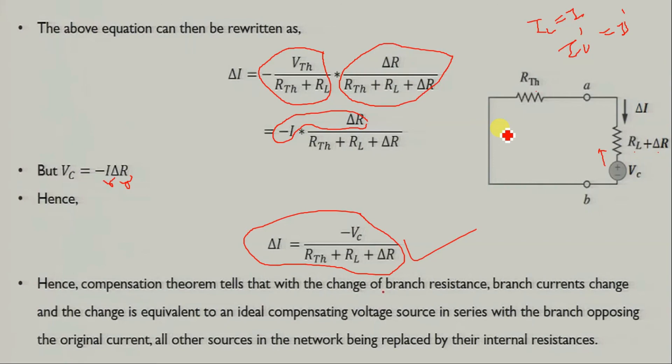Hence the compensation theorem tells us that with a change in branch resistance (R_L + ΔR), the branch current changes, and the change is equivalent to an ideal compensating voltage source in series with the branch, opposing the original current, with all other sources replaced by their internal resistances. If voltage source: short circuited. If current source: open circuited. I hope you understand both the compensation theorem and the reciprocity theorem. We will start a new chapter in the next lecture. Thank you so much.